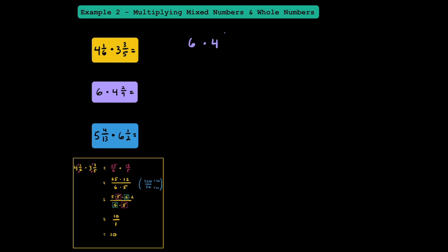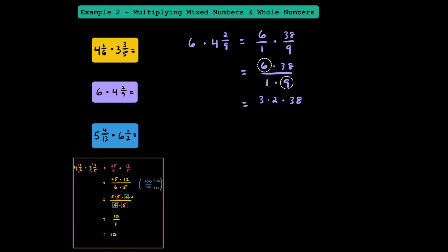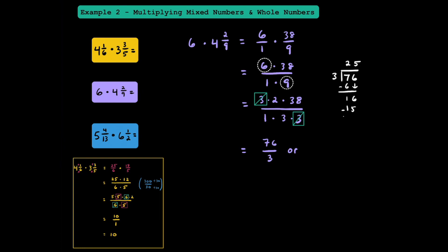Here we have 6 multiplied by 4 and 2 ninths. We'll write 6 as 6 over 1, and convert 4 and 2 ninths into 38 ninths. Rewriting as one fraction, we get 6 times 38 over 1 times 9. Since 6 and 9 have a common factor of 3, I'll break 6 into 3 times 2 and 9 into 3 times 3. The 3s cancel out, leaving 2 times 38 over 1 times 3, which gives us 76 thirds. As a mixed number, using long division: 3 goes into 76 to give 25 with remainder 1, so the answer is 25 and 1 third.